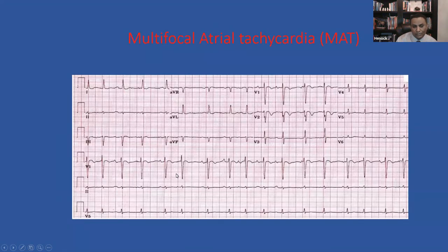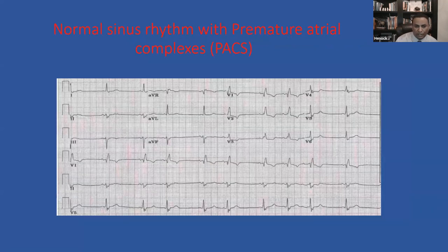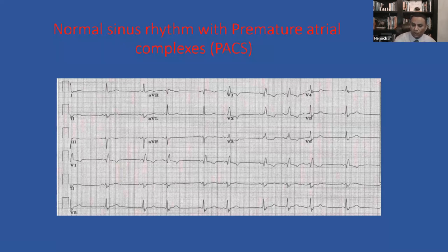In multifocal atrial tachycardia you see P-waves, but the P-waves are different in shape — this P-wave, this P-wave, this P-wave are all different — and the R-to-R is irregular. You see it in patients with COPD, hypoxia, and those on bronchodilators or theophylline. The third pattern is normal sinus rhythm with premature atrial complexes: you have P-wave, QRS, P-wave, QRS, but then a premature beat — so the R-to-R looks irregular but it's normal sinus with PACs. These are the three items you need to differentiate when you see irregular R-to-R.